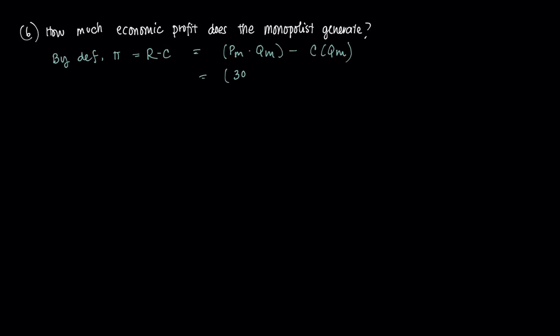Plugging that in, revenue of the monopolist equals 300 times 5 minus our cost function, which is 20q², so that's 5 squared plus 500. This equals 1500 minus this entire thing, which is minus 1000, therefore the profit πm equals 500. That's the profit of that monopolist in this case.